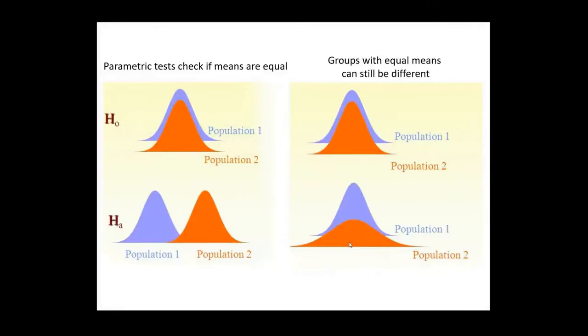But you can immediately see that the two groups are not the same because the spreads are very different. This is a high and sharp curve, and this is a flat curve. The two groups are not the same, but the parametric test will miss that. This is why you have to check this yourself.